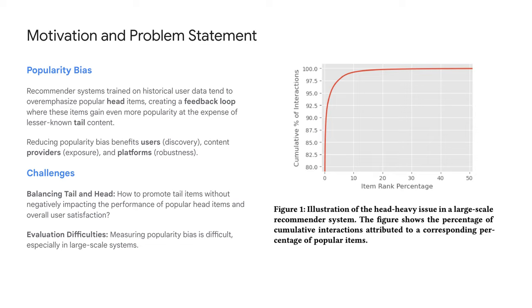But there are challenges. First of all, how can we promote tail items without negatively impacting the performance of the popular ones? And secondly, how can we measure popularity bias, especially in large-scale systems?